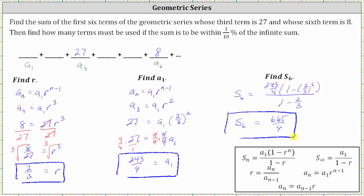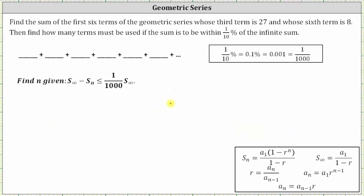Now let's work on determining how many terms must be used if the partial sum is to be within one-tenth of a percent of the infinite sum. Notice that one-tenth of a percent as a fraction is equal to one-thousandth. Therefore, to answer the question, we need to solve the inequality: the infinite sum minus the partial sum is less than or equal to one-thousandth times the infinite sum, where our goal is to determine the value of n.